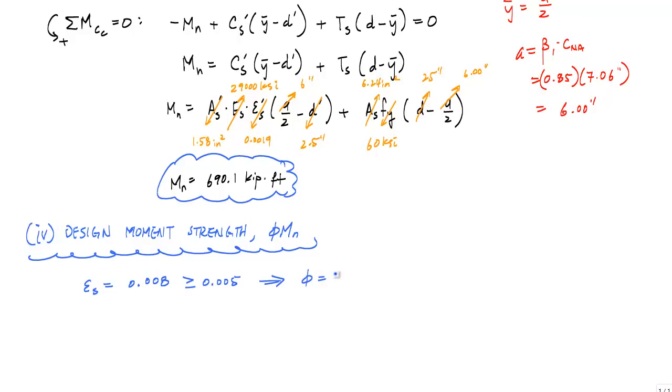So phi times MN equals 0.9 times 690.1 kip-feet, which gives me 621.1 kip-feet. And that is my design moment strength.